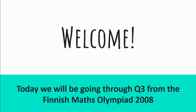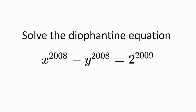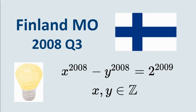Welcome! Today we'll be going through question 3 from the Finnish Maths Olympiad 2008. Solve the Diophantine equation x to the power of 2008 minus y to the power of 2008 equal to 2 to the power of 2009. Please pause the video here and have a think about the problem on your own before proceeding to the hints and solutions.